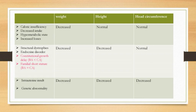In caloric insufficiency, which includes decreased intake or hypermetabolic state with increased glucose: weight is decreased, height is normal, and head circumference is normal. In structural dystrophies and endocrine disorders: weight is decreased, height is decreased, and head circumference is normal.